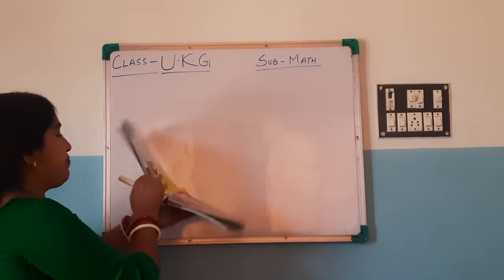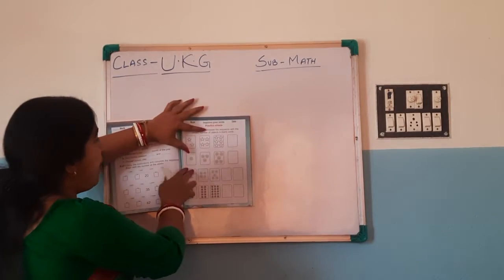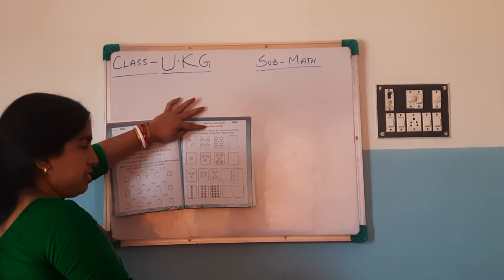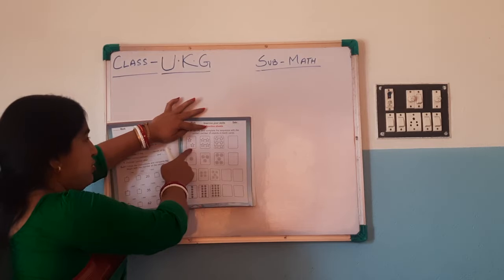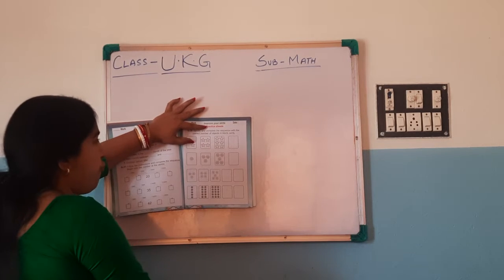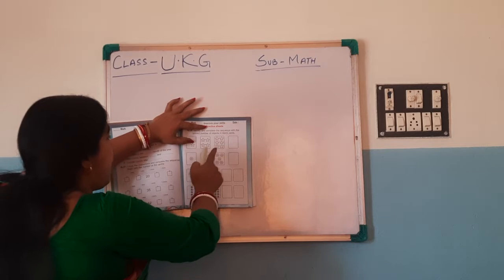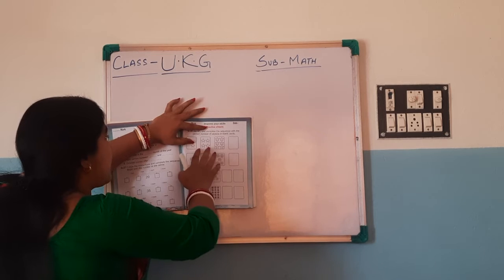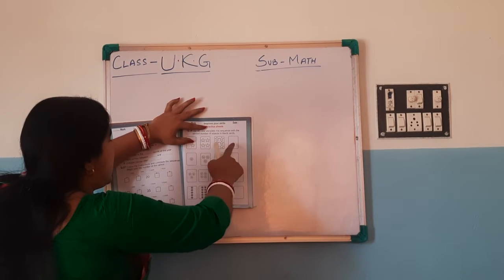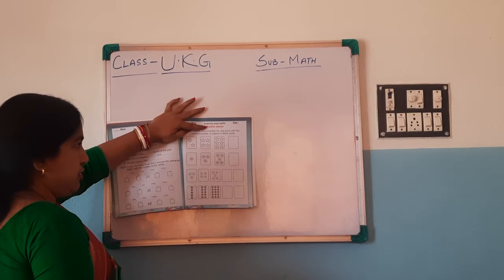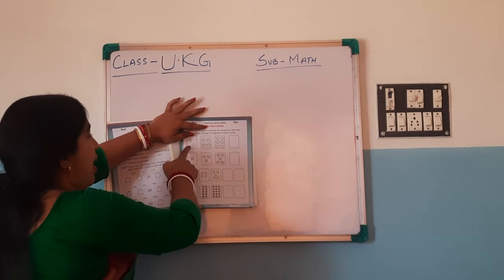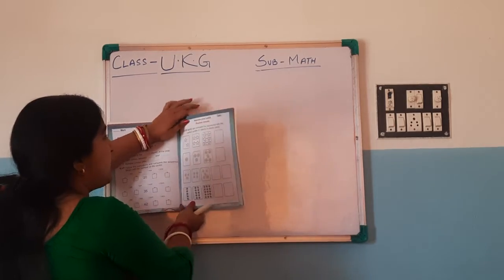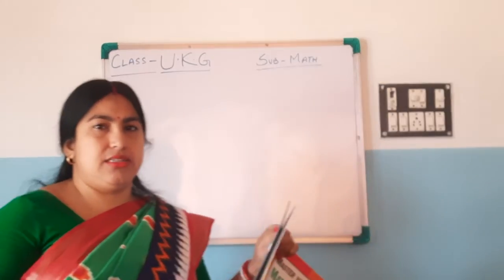Look here, all of you. In the book, three boxes are there. In each box there are different numbers of stars. In the first box there are two stars, in the second box there are four stars, and in the third box there are six stars. So what number of stars will come in the fourth box? Can you guess? Two, four, six — in the next box you have to draw eight stars.